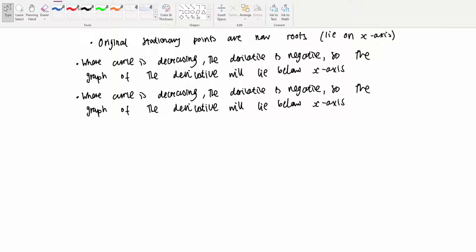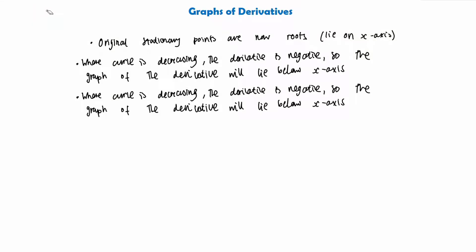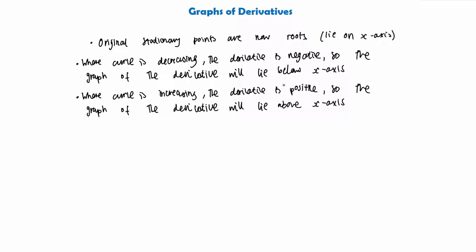Wherever the curve is increasing, the derivative becomes positive. So the graph of the derivative will lie above the x-axis. Wherever the curve is increasing, the derivative is positive and the graph will lie above the x-axis.